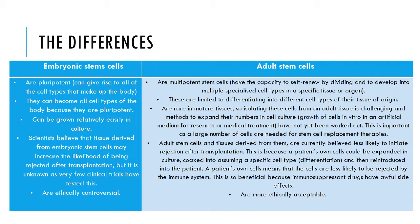However, adult stem cells and tissues derived from them are currently believed to be less likely to initiate rejection after transplantation. This is because the patient's own cells could be expanded in culture, coaxed into assuming a specific cell type through differentiation, and then reintroduced into the patient. A patient's own cells are less likely to be rejected by the immune system, which is beneficial because immunosuppressant drugs have awful side effects. Adult stem cells are also considered more ethically acceptable.